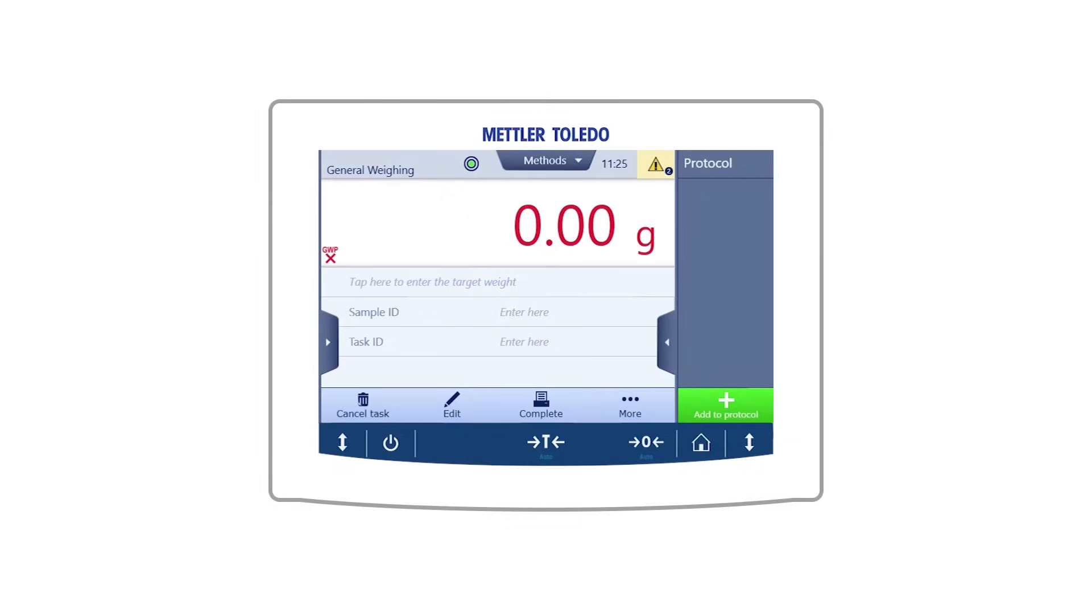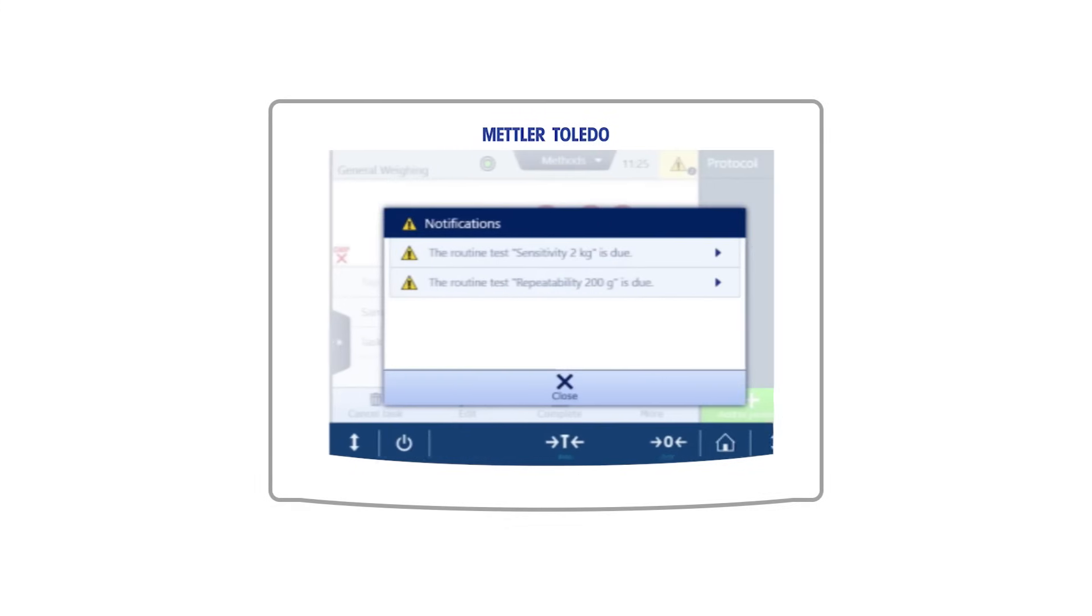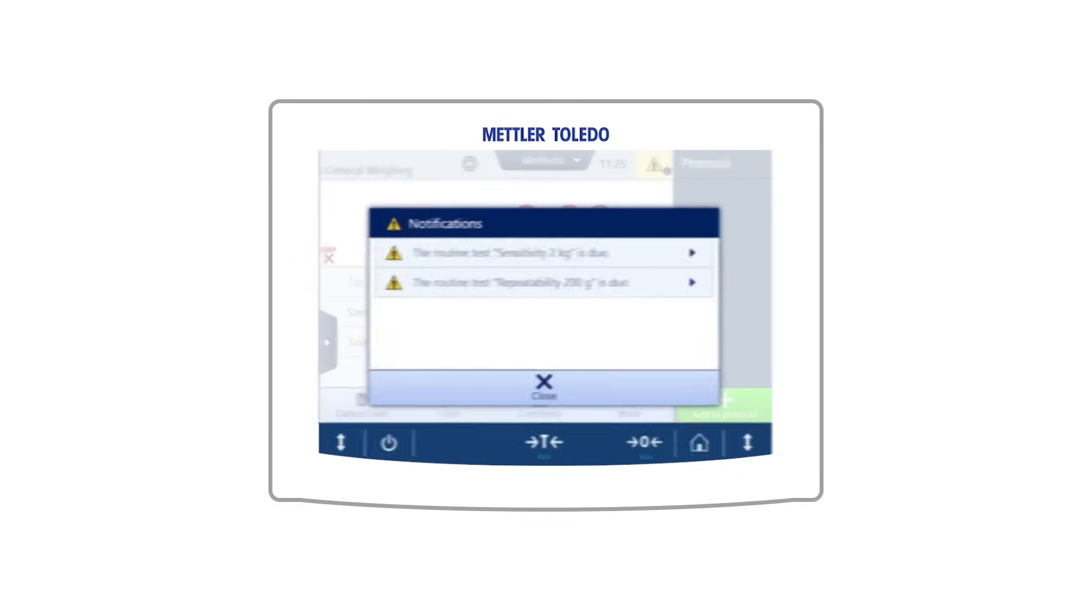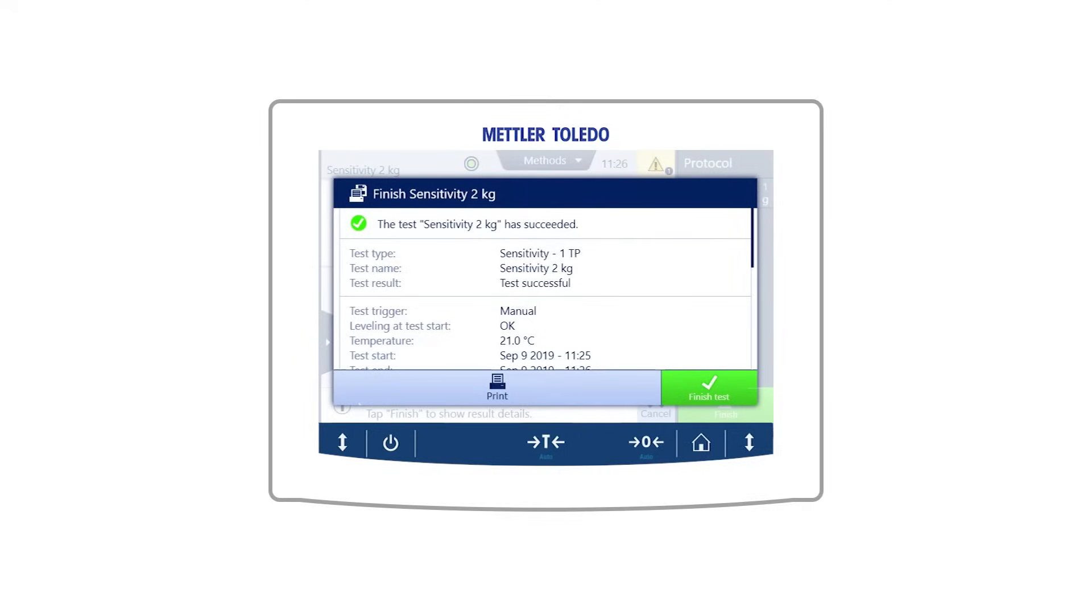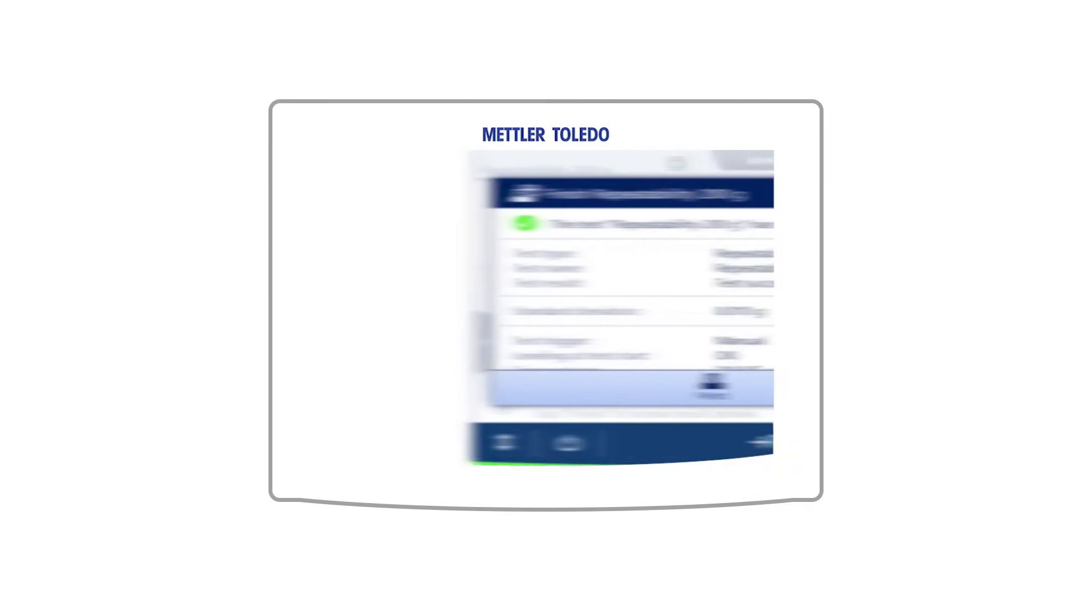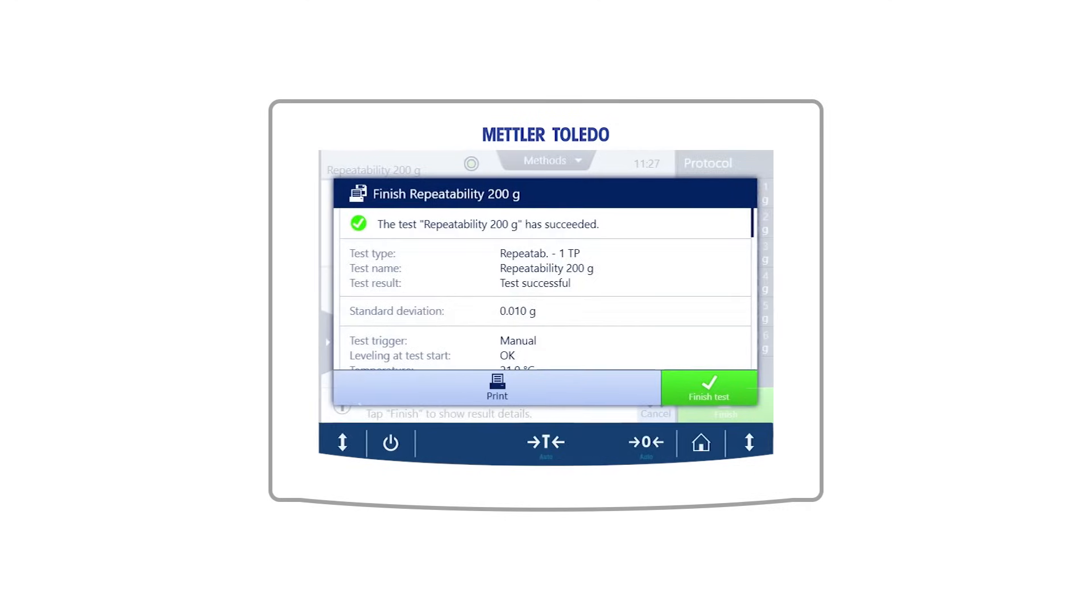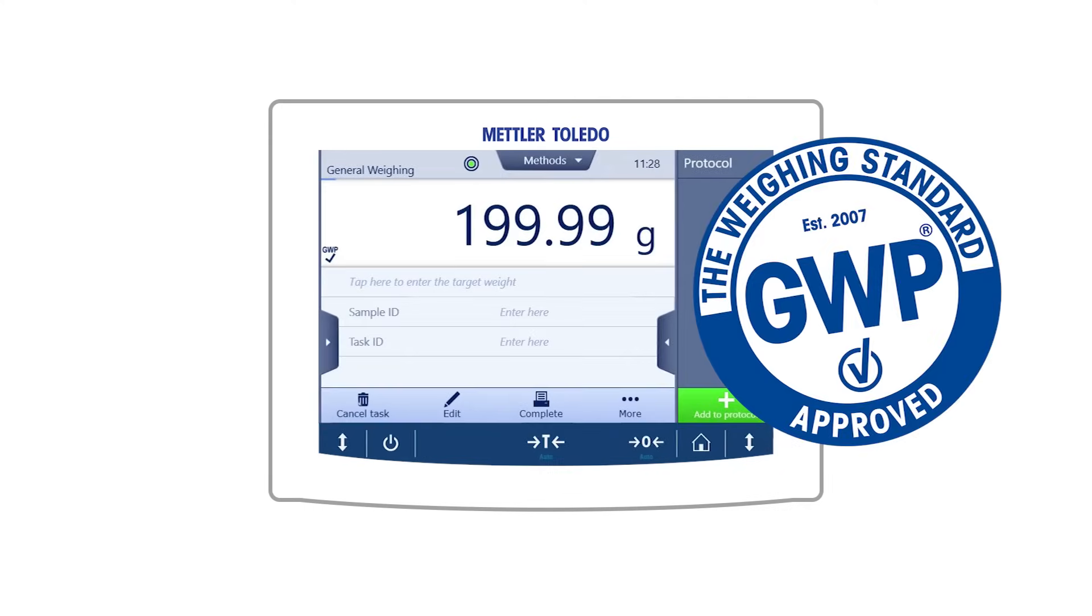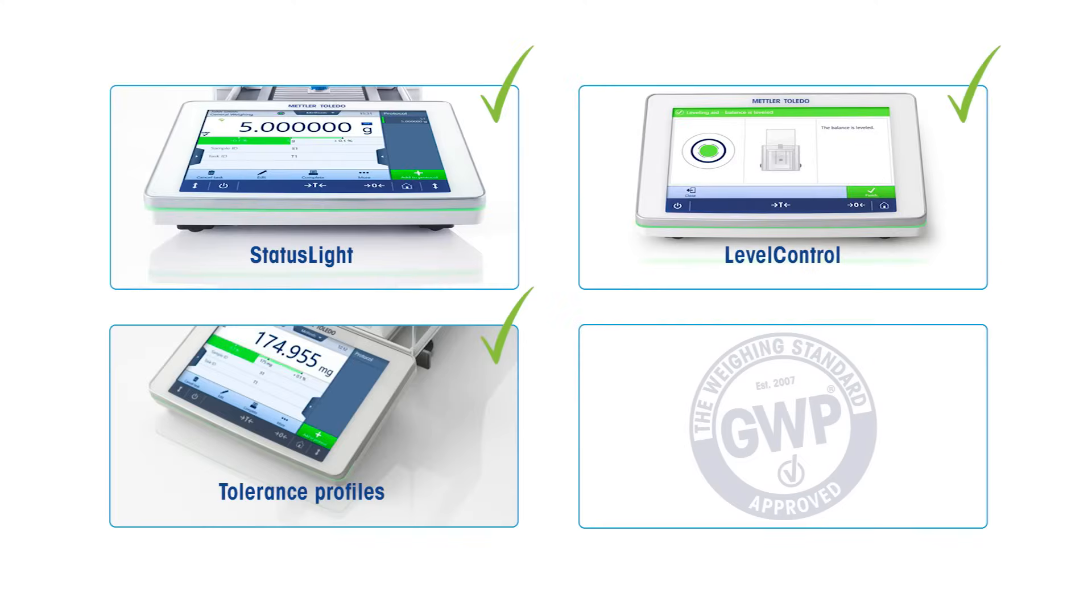Last but not least, there is the exciting new GWP Approved function. GWP Approved actively monitors the balance status and all relevant conditions for accurate weighing. The icon shows you that every single one of your results is valid.